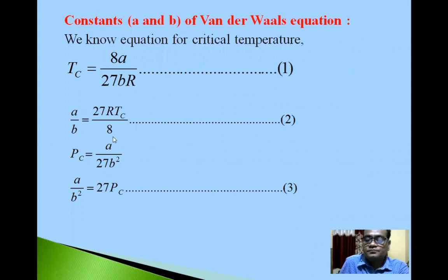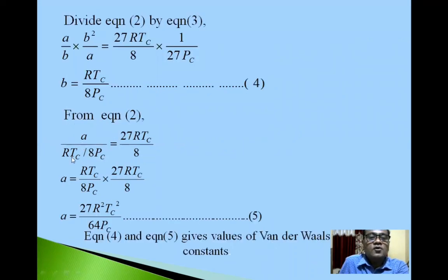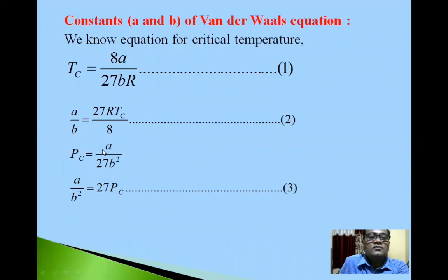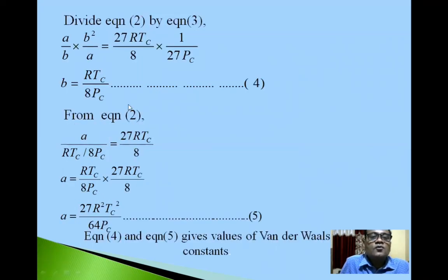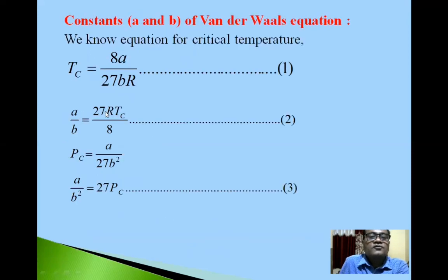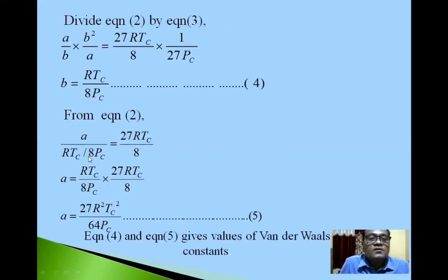From the second equation, a upon RTc upon 8Pc, means here we have put value of b. This b value is equal to 27RTc upon 8. So from this we will get a is equal to RTc upon 8Pc into 27RTc upon 8. Simplifying this, we will get a is equal to 27R²Tc² upon 64Pc.